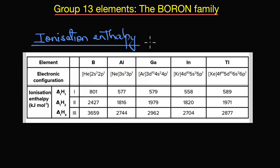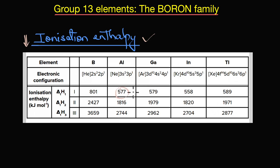Moving ahead, let's look at ionization enthalpy. Ionization energy in general decreases down the group because valence electrons are far from the nuclear attraction, making it easy to remove them. But here we see a distinct increase in ionization enthalpy from aluminium to gallium, and it further increases from indium to thallium.